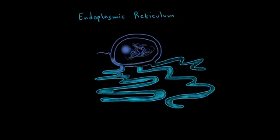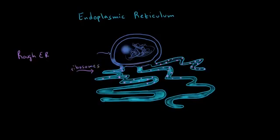So what does the endoplasmic reticulum do? The endoplasmic reticulum actually has two parts to it. It has one part that's known as the rough endoplasmic reticulum, and that has a bunch of ribosomes. And then the endoplasmic reticulum has a smooth part. That part does not have any ribosomes.